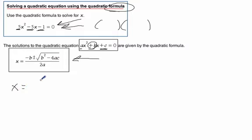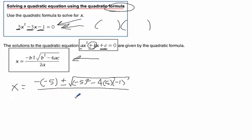So what does x equal? It's going to be negative of b, which is negative 5, plus or minus the square root of b squared, which would be negative 5 squared, minus 4 times a, which is 5, times c, which is negative 1. And then that whole thing is going to be divided by 2 times a, which is 5.